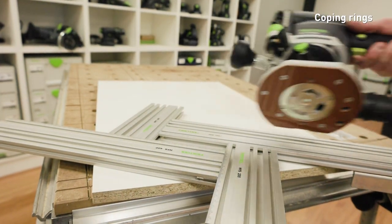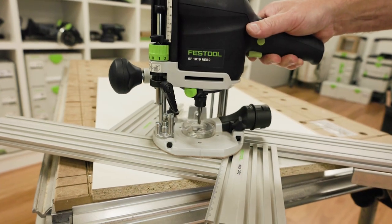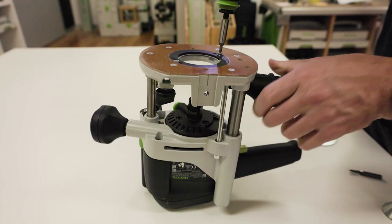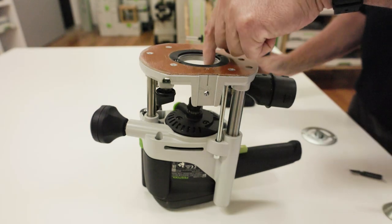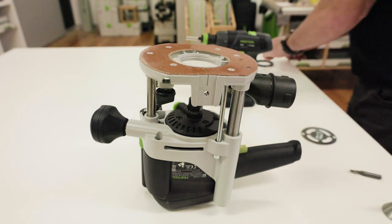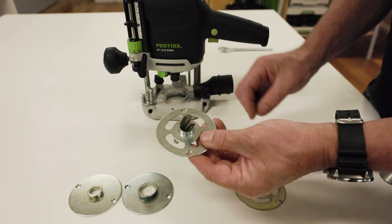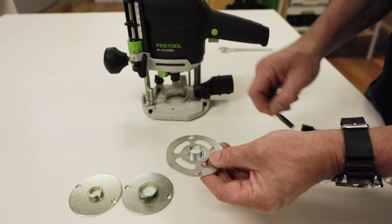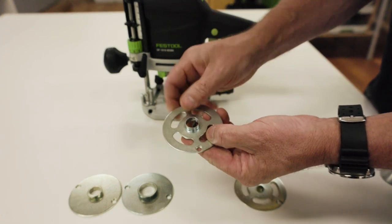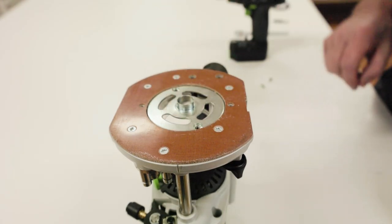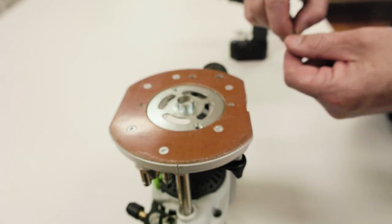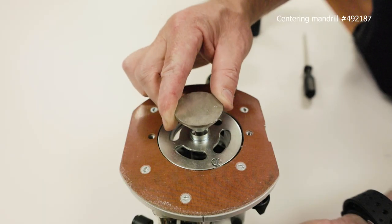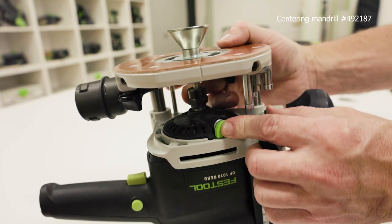Copying rings can be used for copying and template applications. They are available in different sizes to suit different cutter widths and template applications. To fit the copying ring, first remove the plate in the base of the router. Choose a suitable copying ring to suit the chosen cutter. When choosing the size of the copying ring, make sure that the cutter used fits through the ring's opening. The copying ring will come with flat base screws that will hold the copying ring in the central position. When needing to centre the copying ring to the collet, a centering manual can be used.